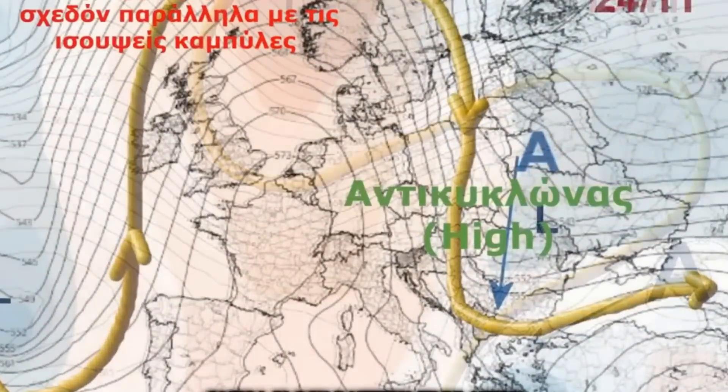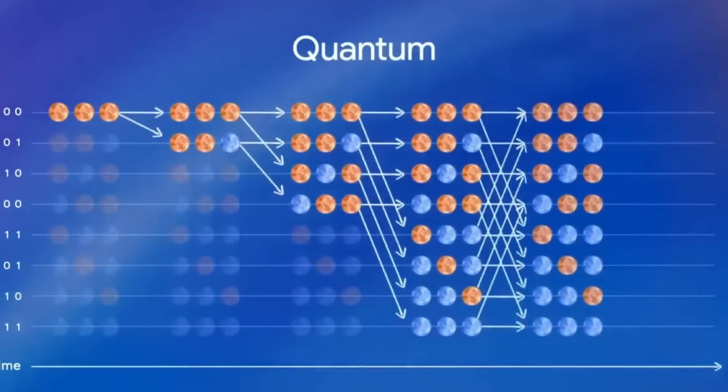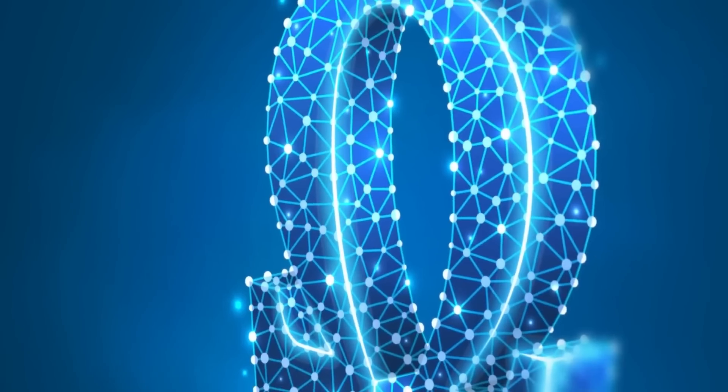It wasn't random. It was code. Code built to hide inside chaos. Code designed never to be found, until now.